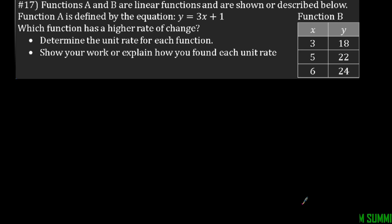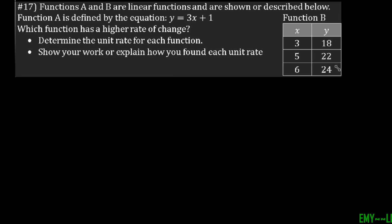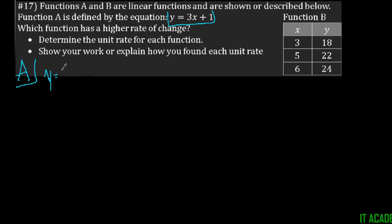For number 17, it says functions A and B are linear functions shown or described below. Function A is y equals 3x plus 1, and function B is given as a table. It asks which function has a higher rate of change. We have to find the unit rate for each function and explain how we found each one. Unit rate is the same thing as slope — that's change in y divided by change in x.